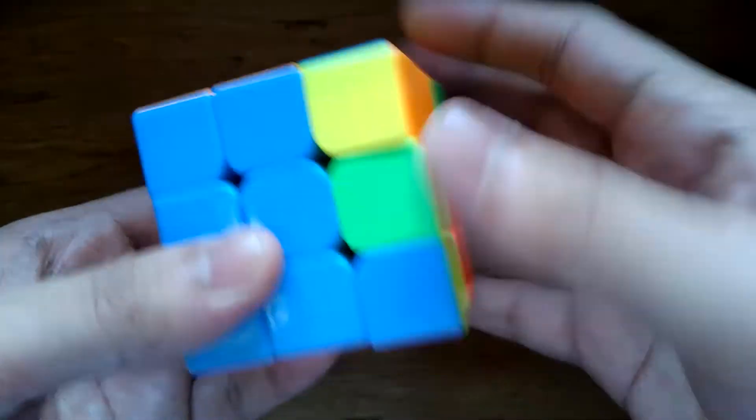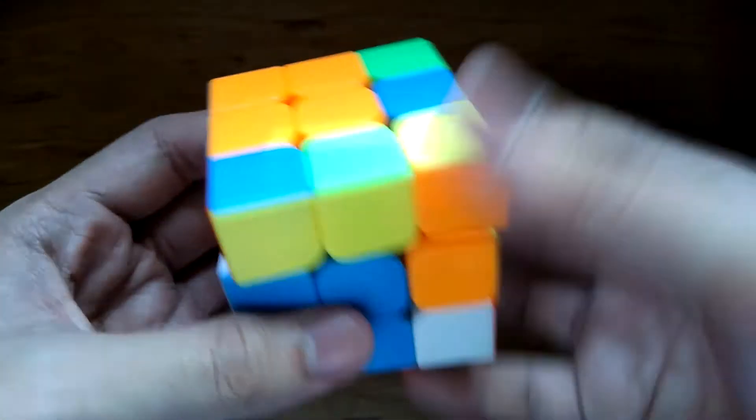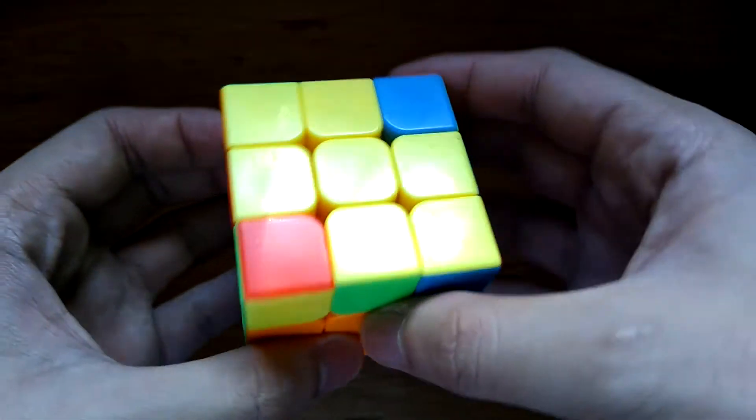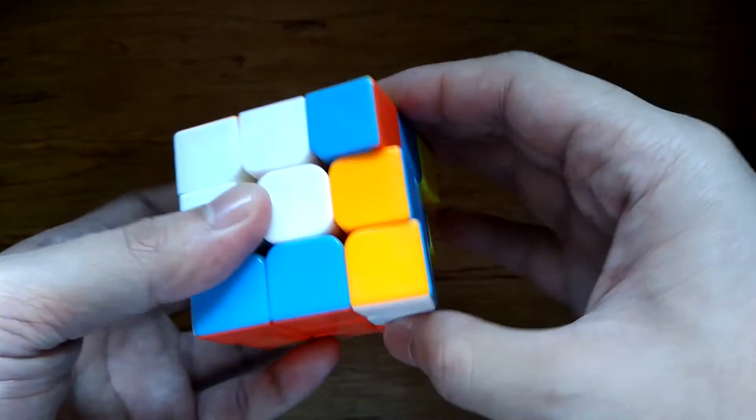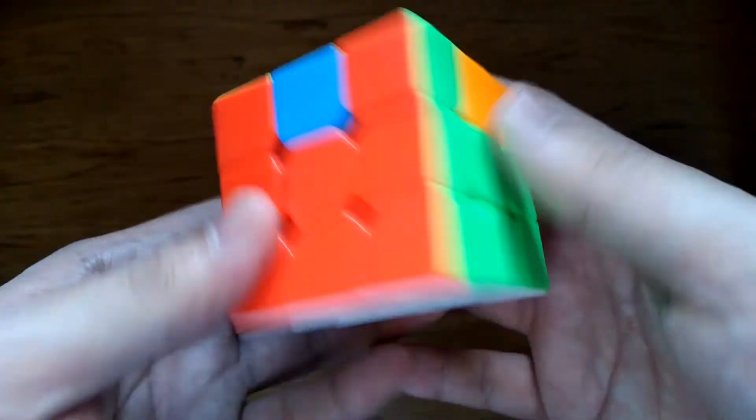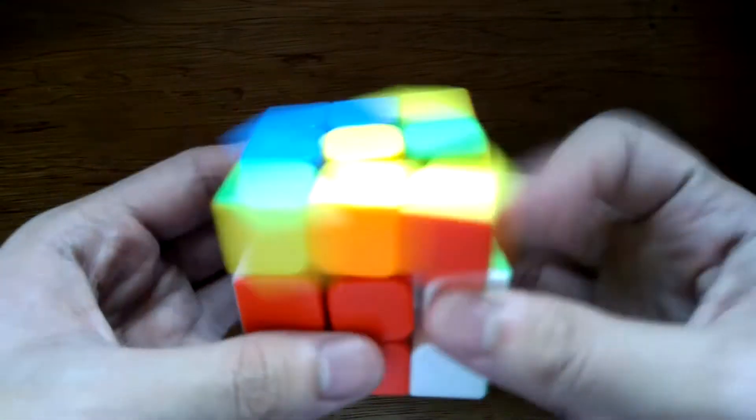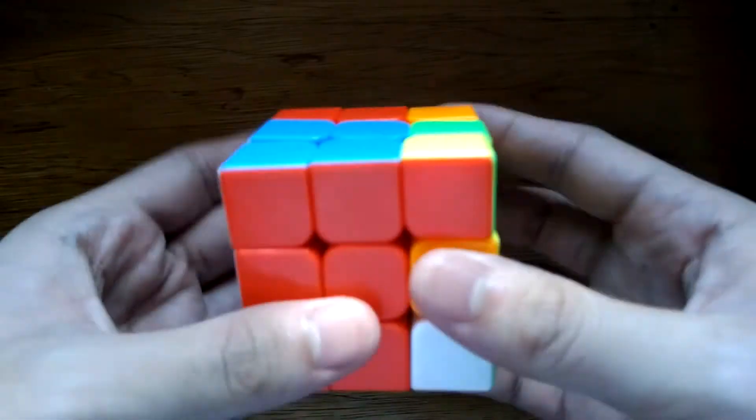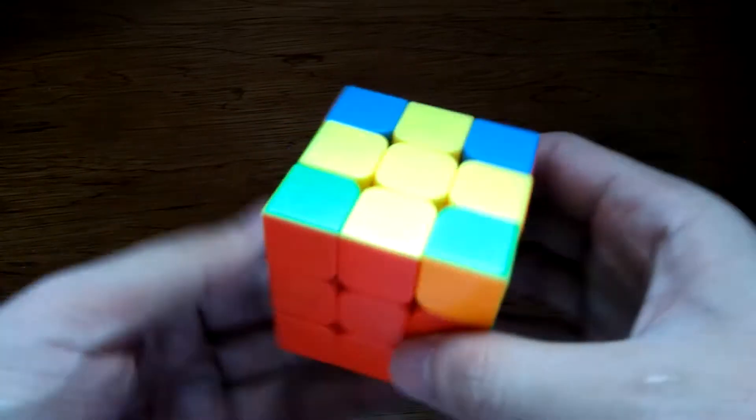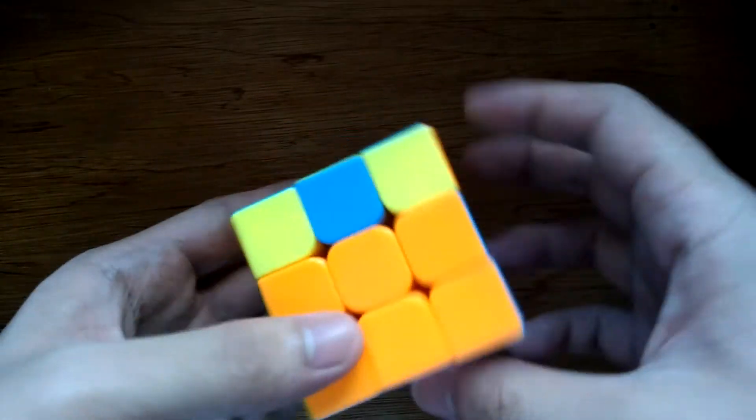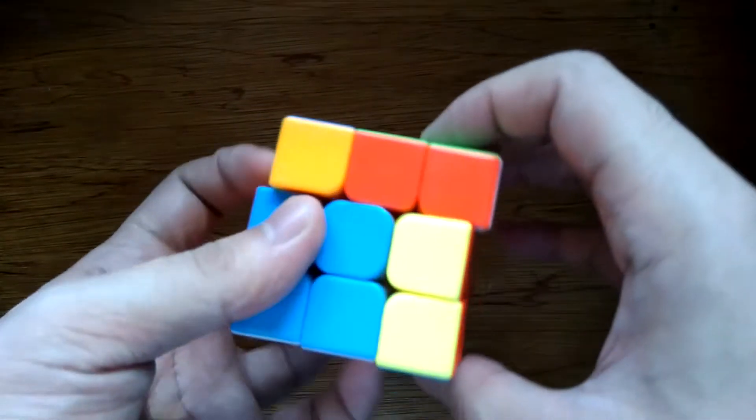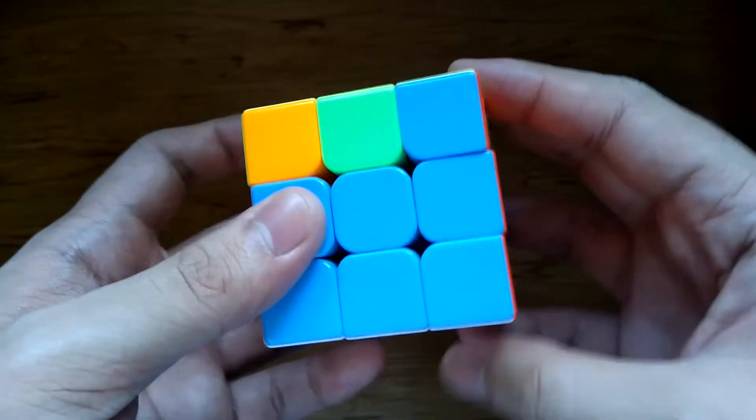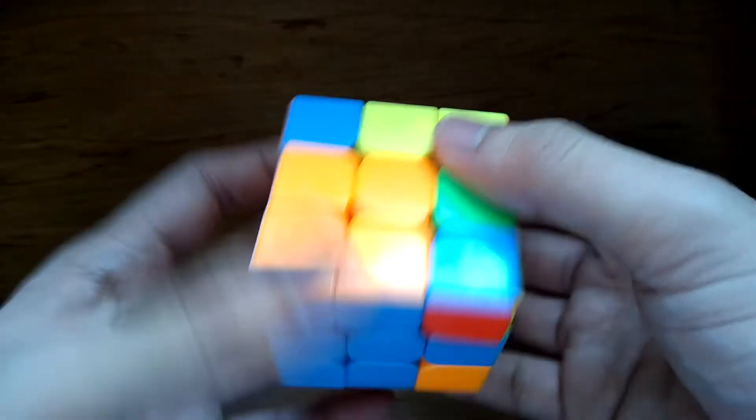This stage involves manipulating the top layer so that all the pieces therein have the same color on top, at the expense of incorrect colors on other sides. This stage involves a total of 57 algorithms. A simpler version called two-look OLL orients edges first and corners afterwards. Algorithms are usually performed two to three times for this version.